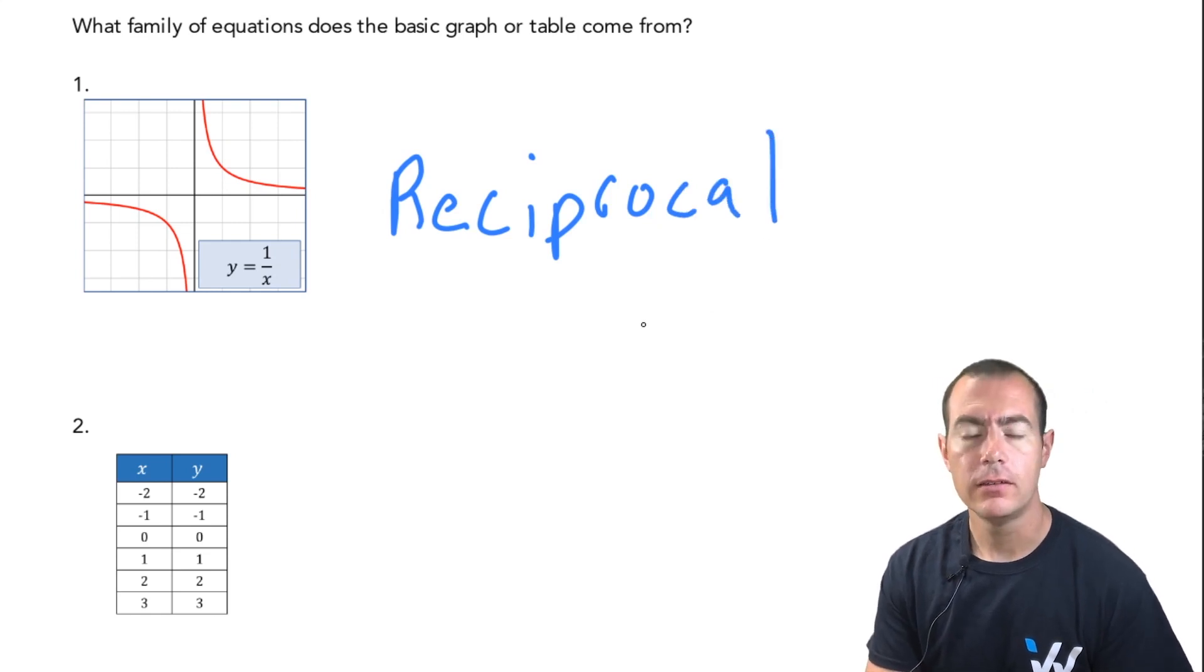A way that you can really recognize this is when looking at the equation, we're dividing by that x variable. And in terms of the graph, we have that missing value that those arms are really getting close to.